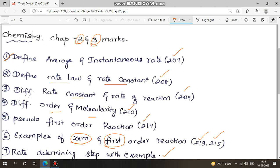Examples are zero order reaction and first order reaction, 213 and 215. Rate determining step with example, this one bookback question. Now, this difference is order and molecularity left side. This is important for the answer of this.